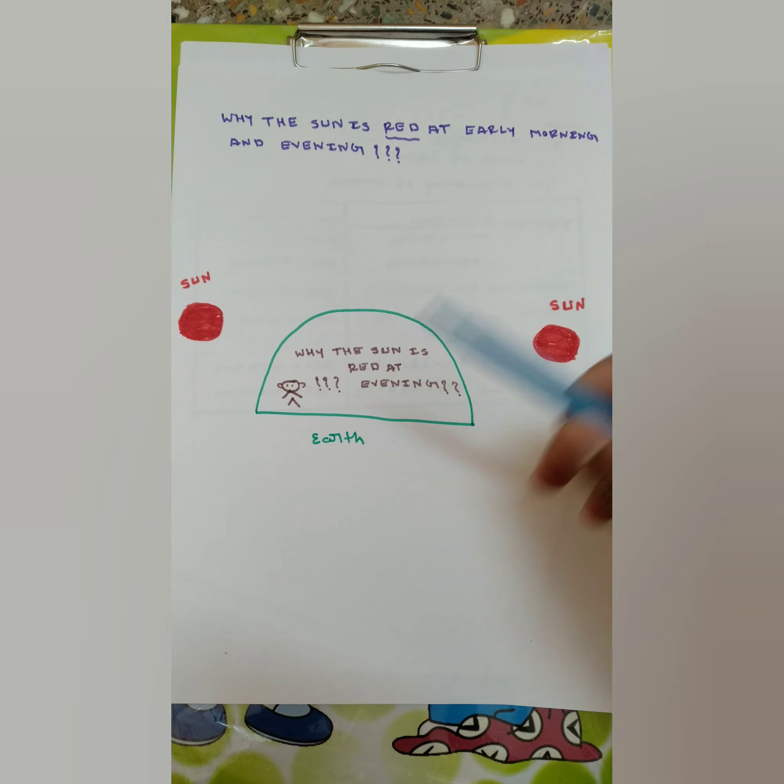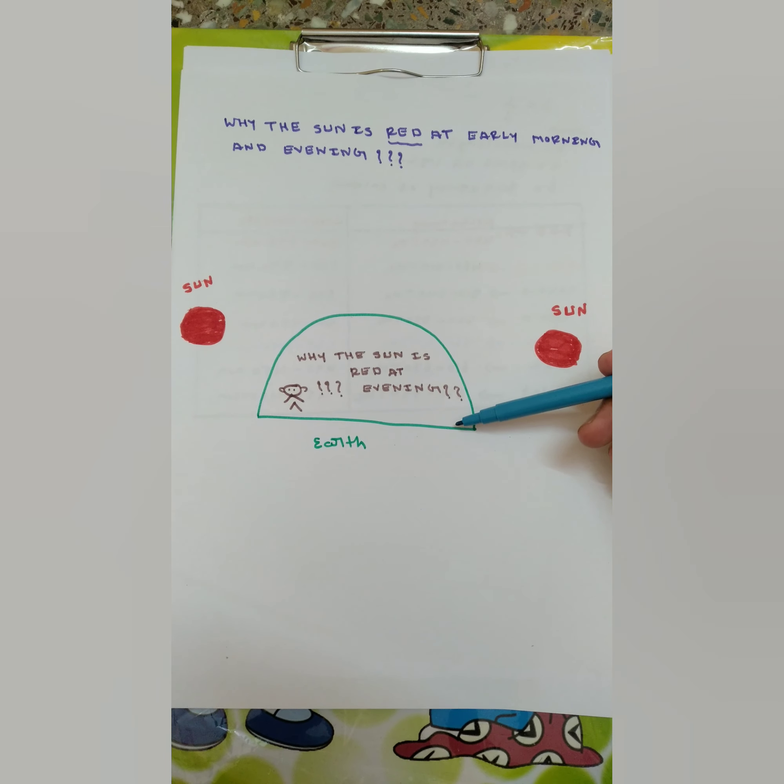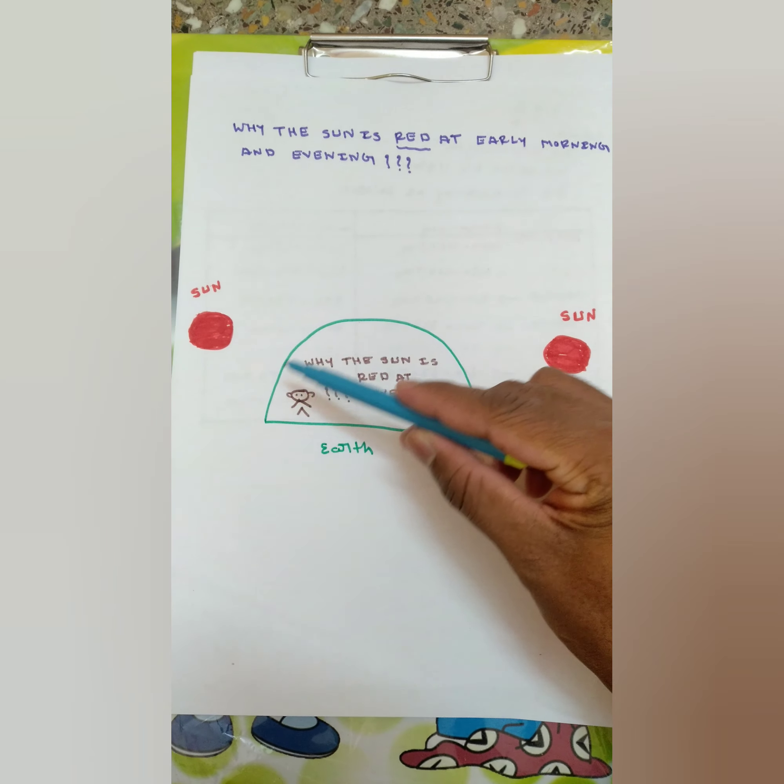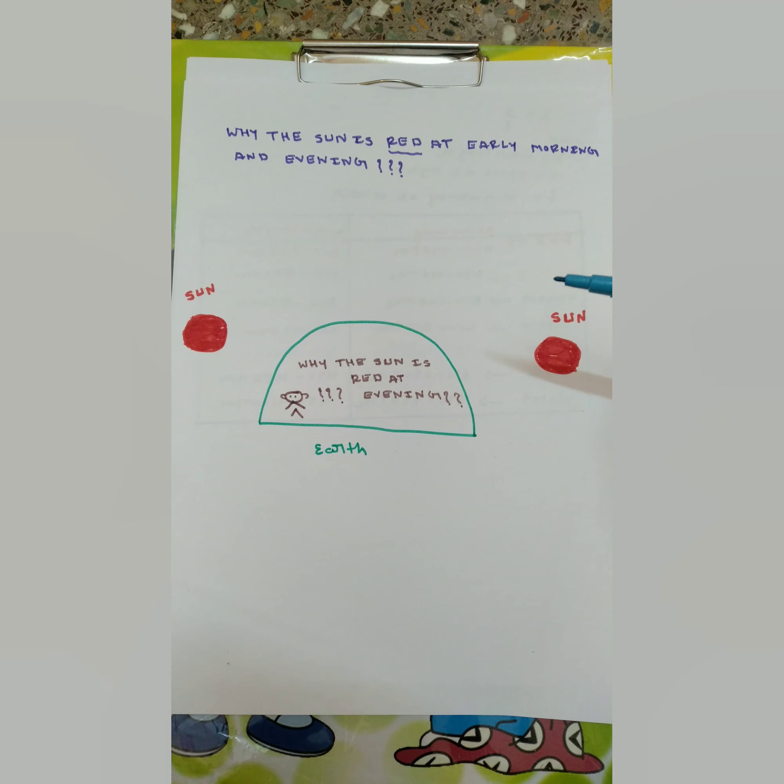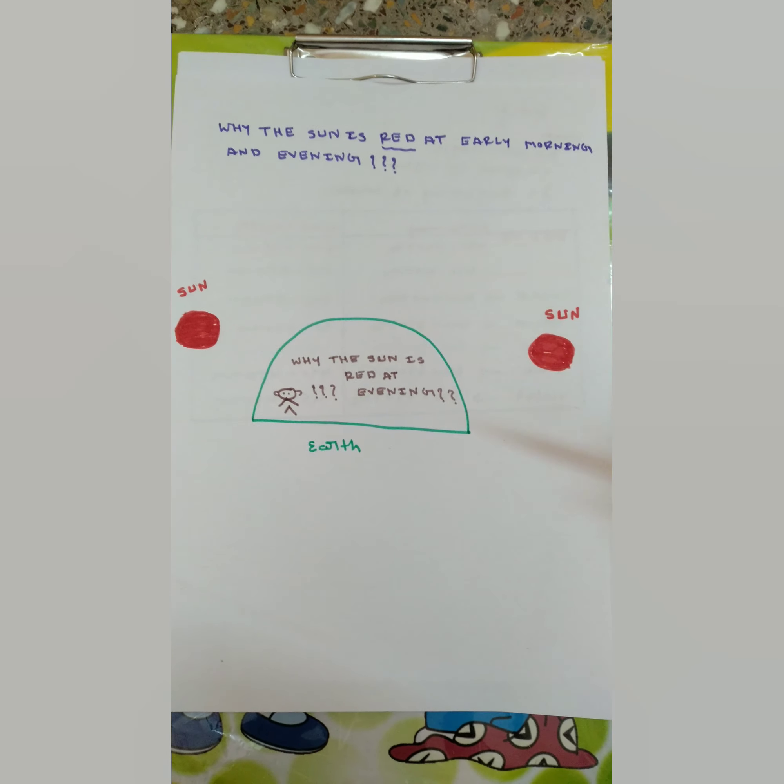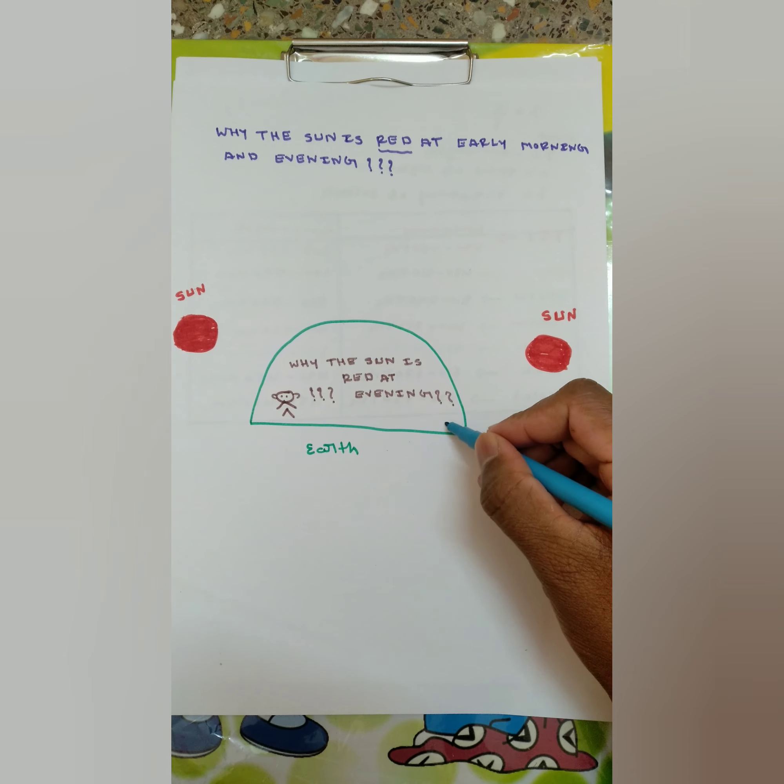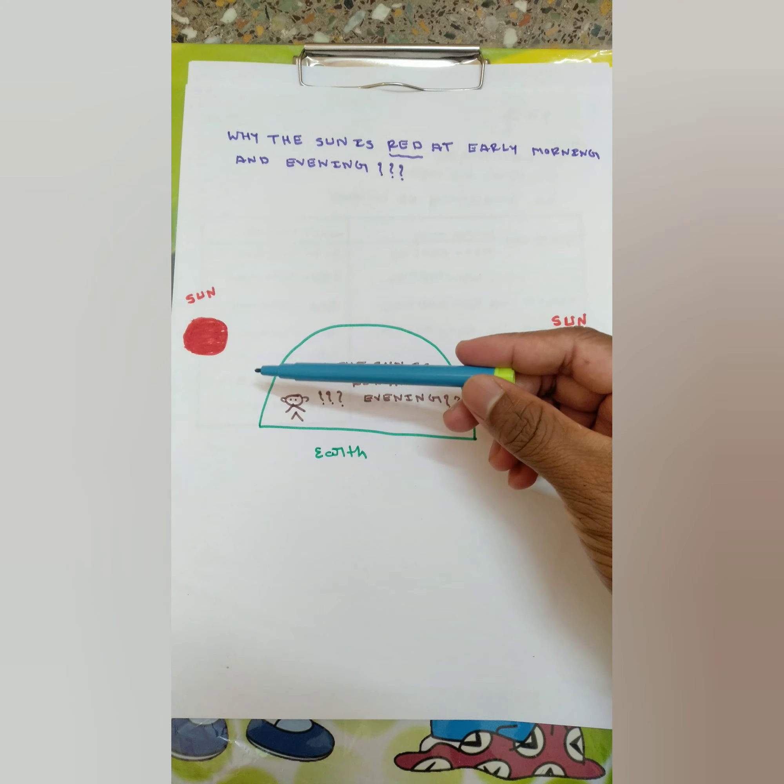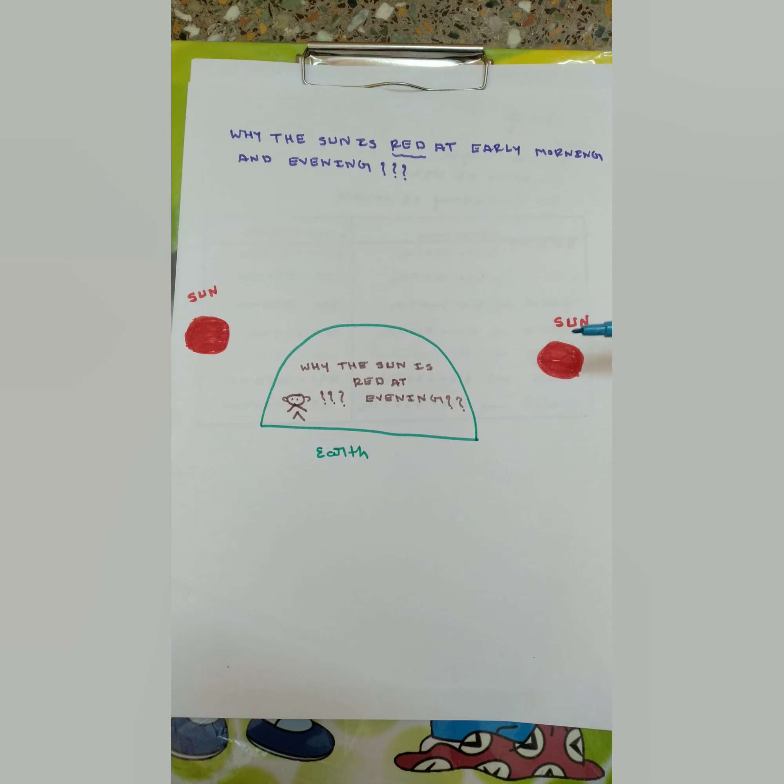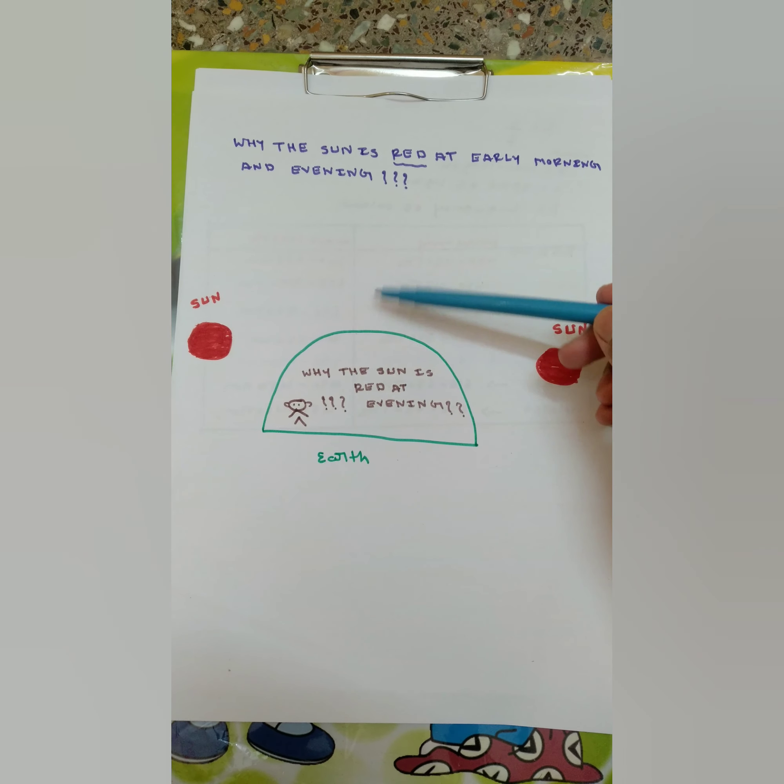Consider this is the Earth surface and this is the atmosphere. I have written why the sun is red at evening and at early morning. This is the Earth surface on which we people will be living or standing. Suppose you are standing on the Earth surface.